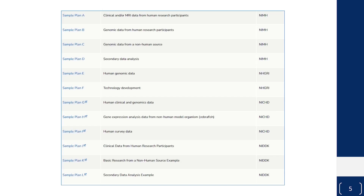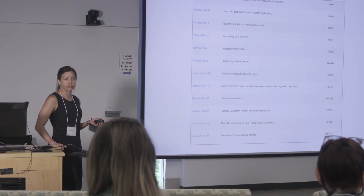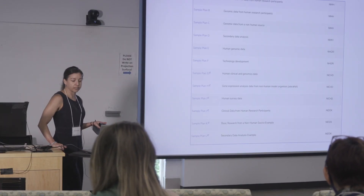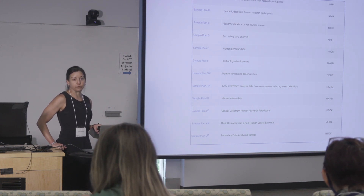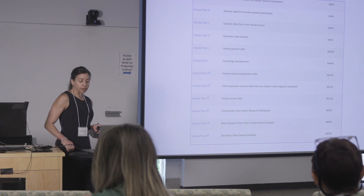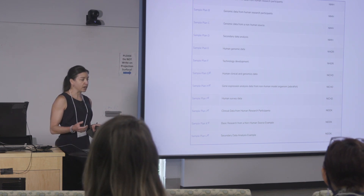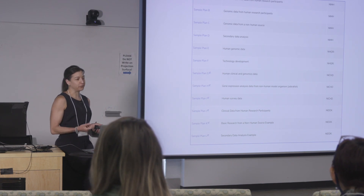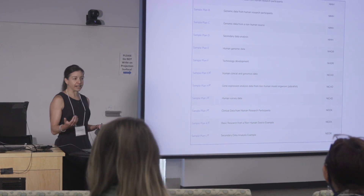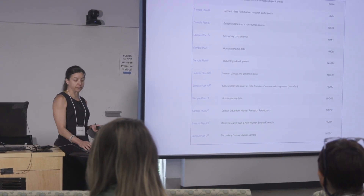Along with the guidance, NIH also released sample data management and sharing plans contributed by various institutes and centers, shown in the third column here. However, none of the plans pertain specifically to network data, and that's problematic because relational data such as network data carry a higher risk of deductive disclosure. They're also a unique case because there's an edge list and an attribute file — it's not just the standard rows and columns you'd see with other data types.